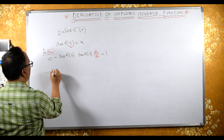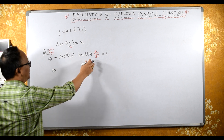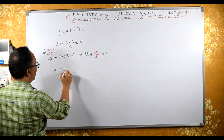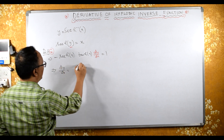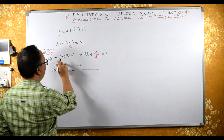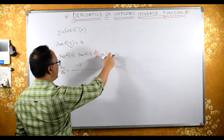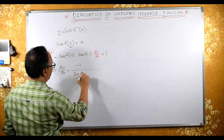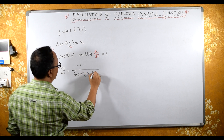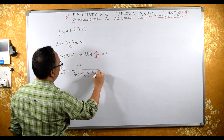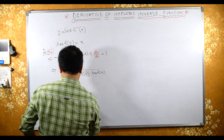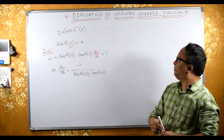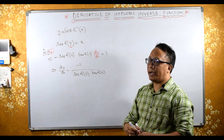Sending the term to the other side, dy/dx equals minus 1 upon sech(y) times tanh(y). Now we need to use identities for sech and tanh to express everything in terms of x.